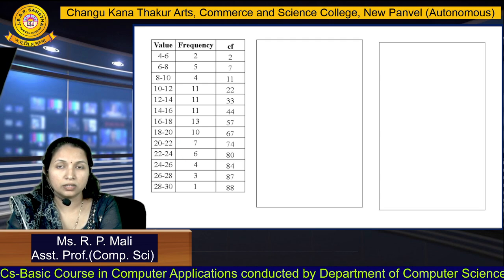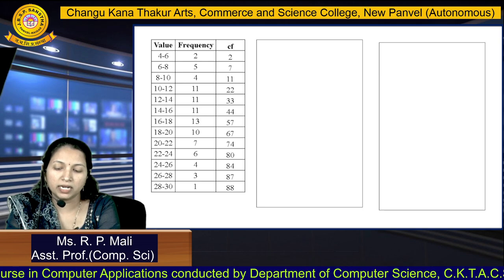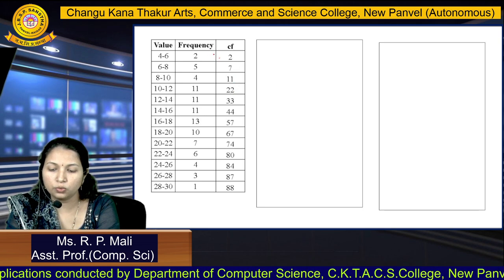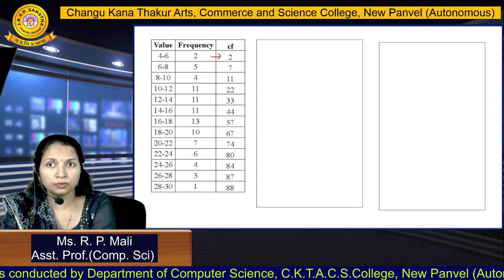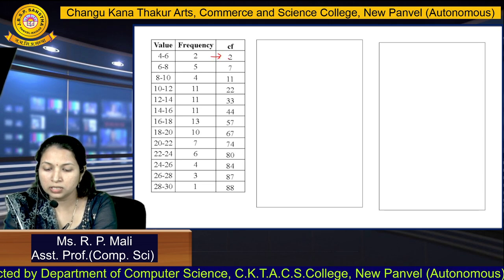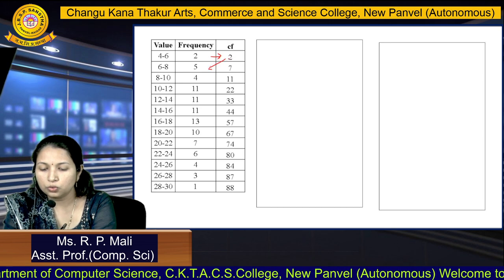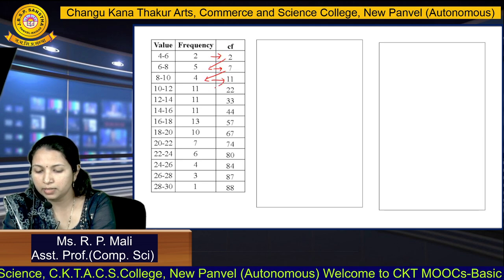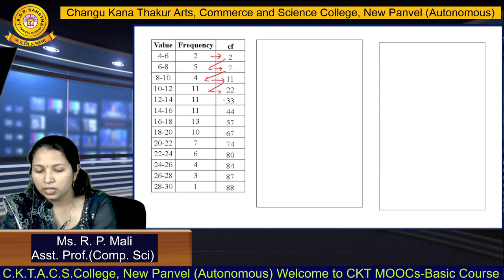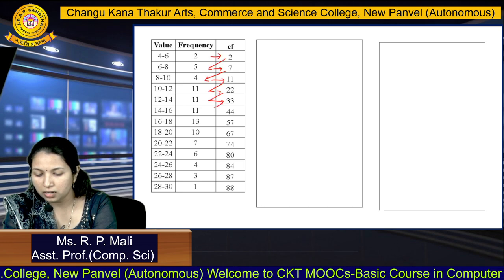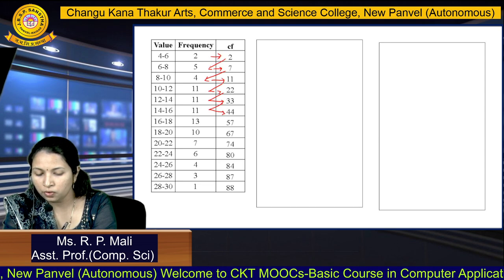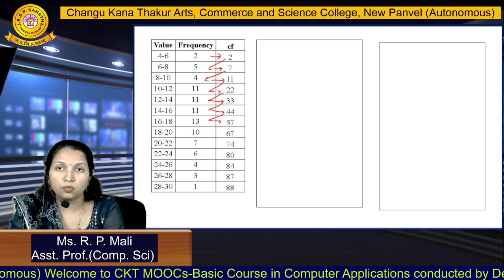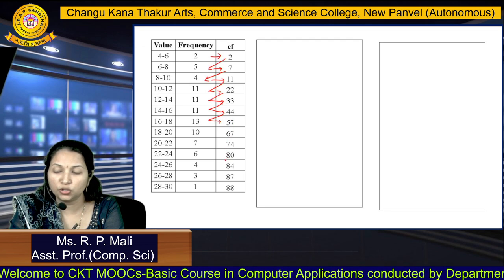For the first quartile, the first step is to find cumulative frequency — this is the less than cumulative frequency. We write 2 as it is. Then 2 plus 5 is 7. 7 plus 4 is 11. 11 plus 11 is 22. 22 plus 11 is 33. 33 plus 11 is 44. 44 plus 13 is 57. You are going to find the less than cumulative frequency. If you want to find more than cumulative frequency, you can find that also.